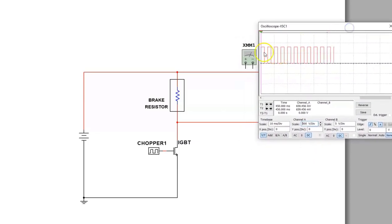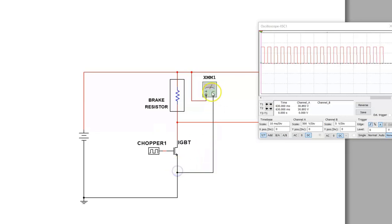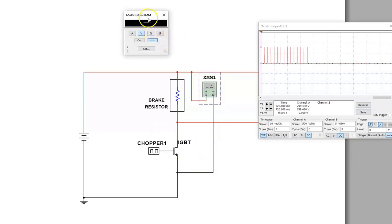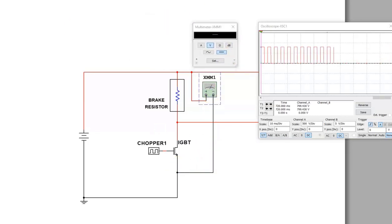I will connect this voltmeter across the resistor and we will see what we have. We have 800 volts across the bus, so we have 800 volts from the plus to the minus.